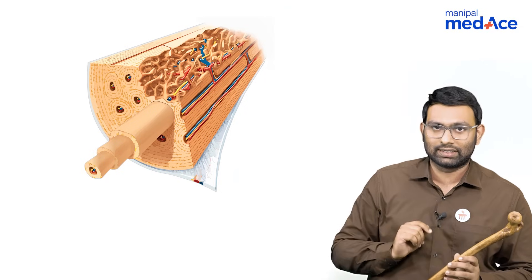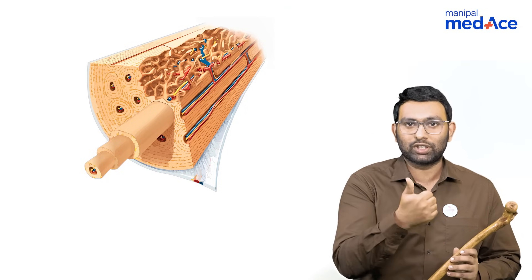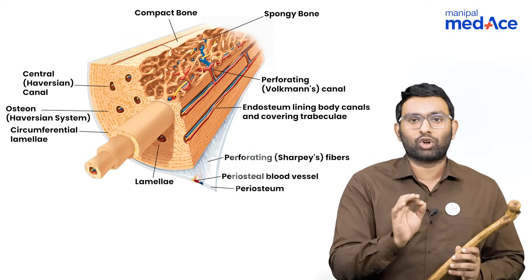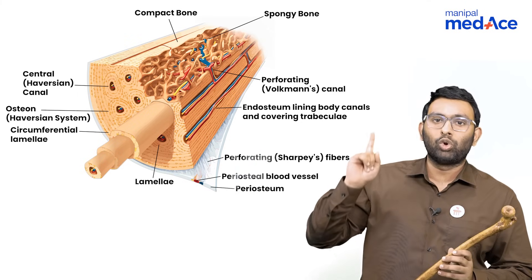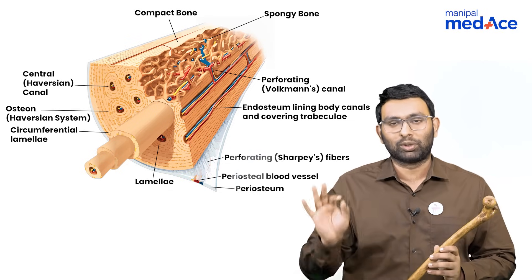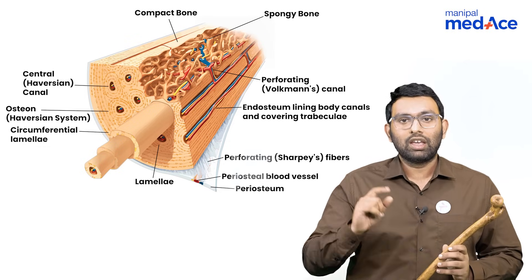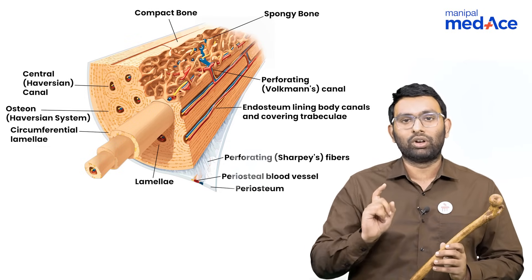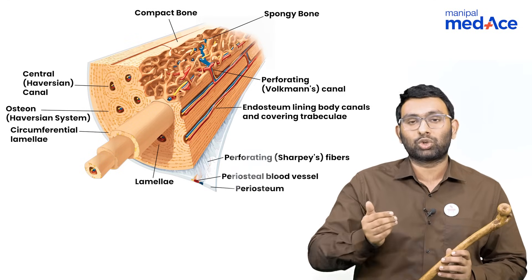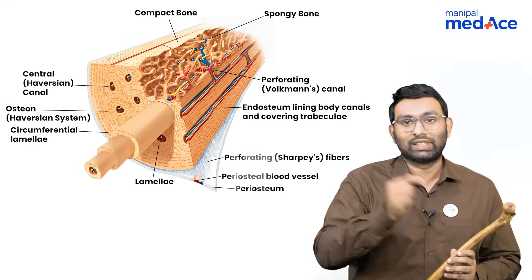If you want to know more about the bone, we have to break it down further, and then you will get an image like this. In this image we can identify three important structures: the first one being the osteon, also called the Haversian system, which is a group of concentric lamellae and is the functional unit of the bone. The other structures are the Haversian canal, which contains blood vessels within the bone, and Volkmann's canal, which also carries blood vessels within the bone.